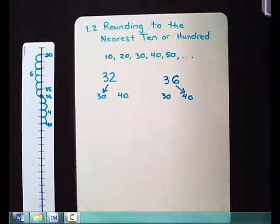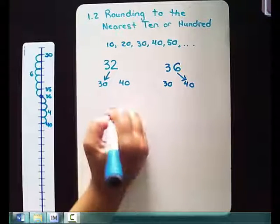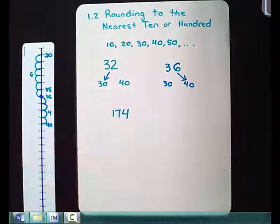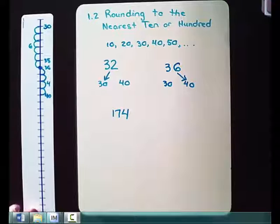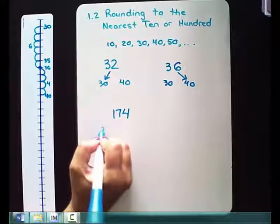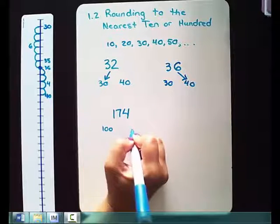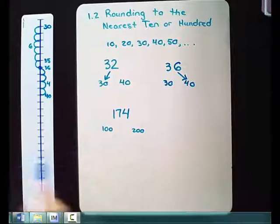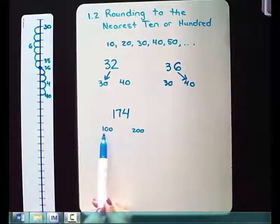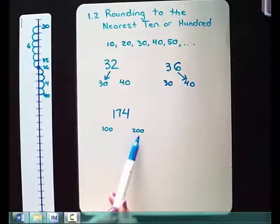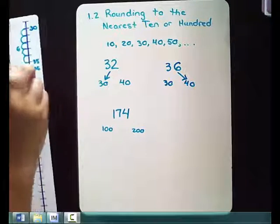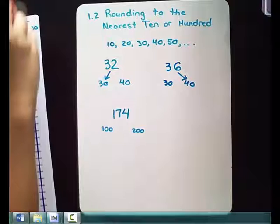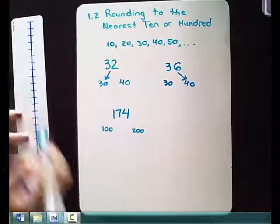That's how you do rounding on a number line. Now, if we're looking at a hundreds number and trying to round it to the nearest hundred — for example, 174 — we're either going to round to 100 or to 200, because 174 is greater than 100 but less than 200, so it falls in between these two numbers. We'll do the same thing using a number line to determine which one it's closer to.